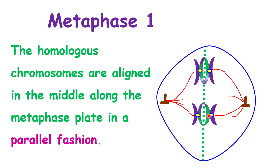After prophase 1 is finished, we go into metaphase 1. In metaphase 1, the chromosomes align in the middle of the cell, which we call the metaphase plate. An important distinction in metaphase 1 is that the chromosomes are aligned in a parallel fashion — side by side. Remember, in mitosis the chromosomes are in single file, but in metaphase 1 they are side by side.